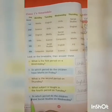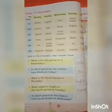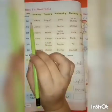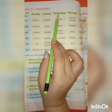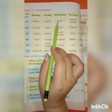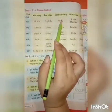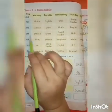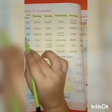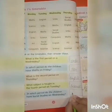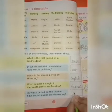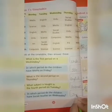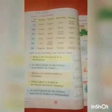Question E: In which period do the children have Social Studies on Wednesday? Here is Wednesday. First period is Urdu, second is Maths, third is Social Studies. We have to write here: Third. Let's write it — T-H-I-R-D, third.